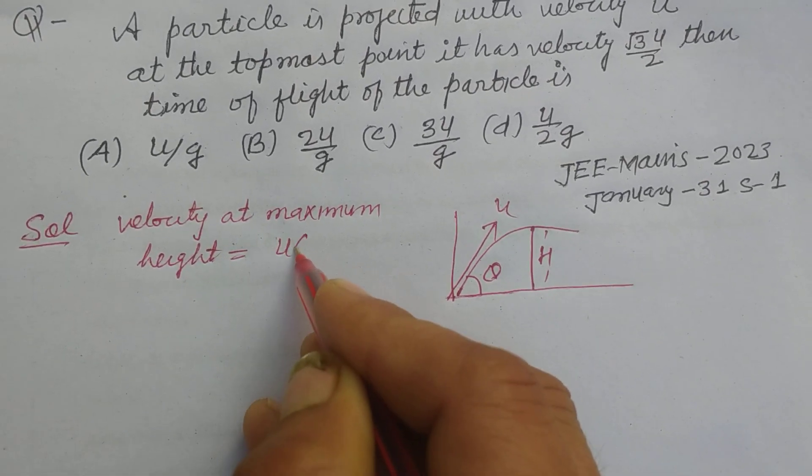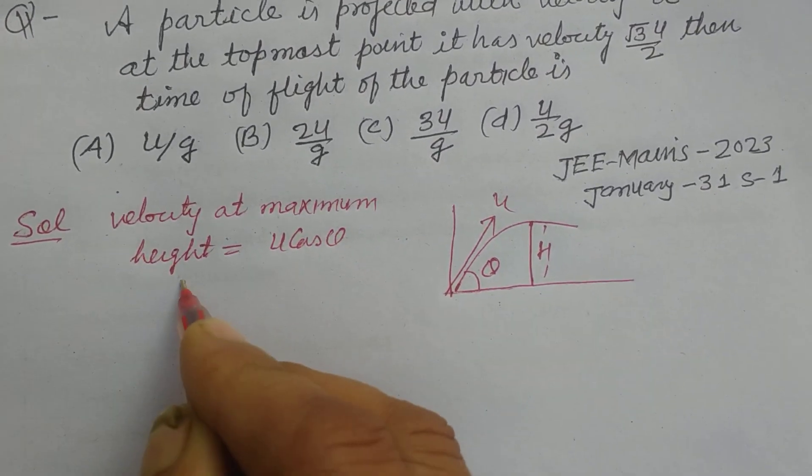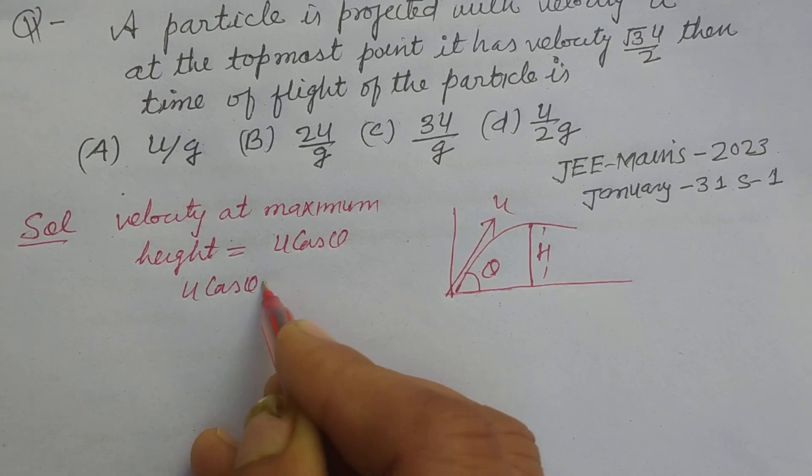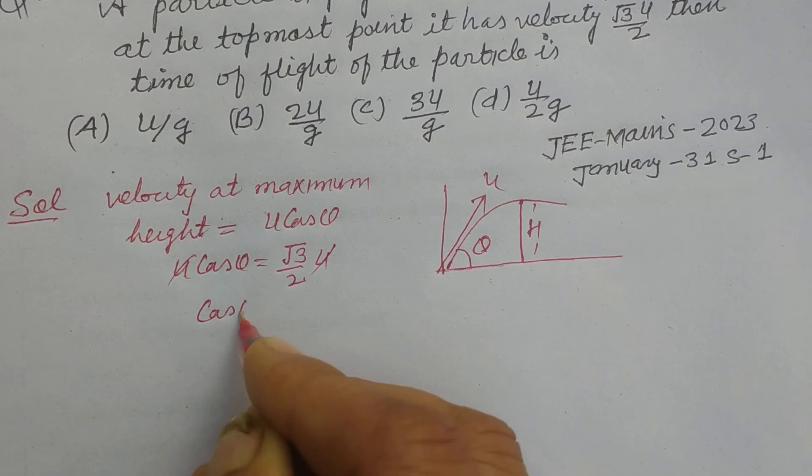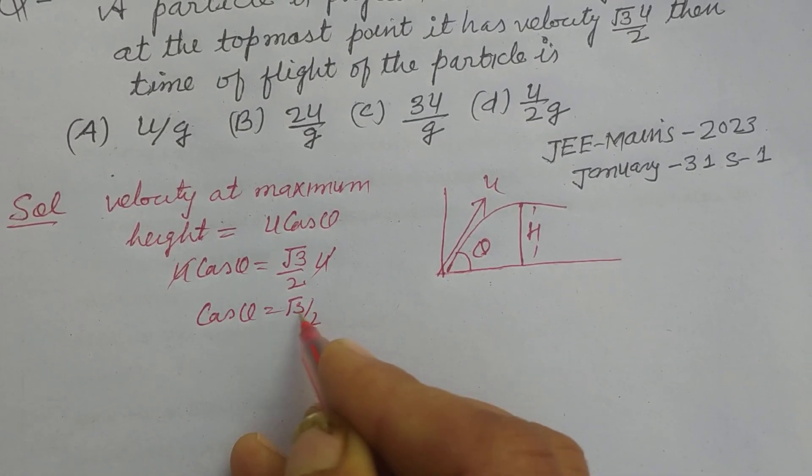You know it is u cos theta. So here u cos theta is given, and the question states √3u/2. So u cancels, we got cos theta equals √3/2.